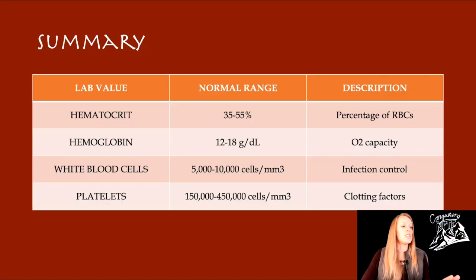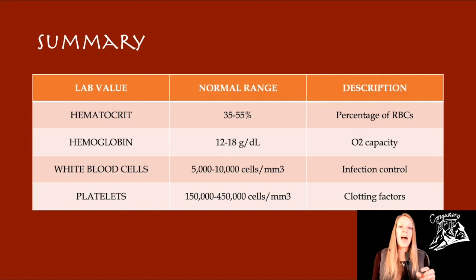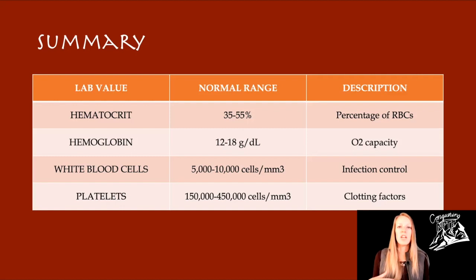Here is a summary table listing all the lab values we went over today, the normal ranges for those values, and a quick description of what each one is. Hopefully that will help when you're studying. Next week, we're going to continue with these values and add a column for a cutoff score — if the lab values are below this range, then it's not safe to exercise your patient.